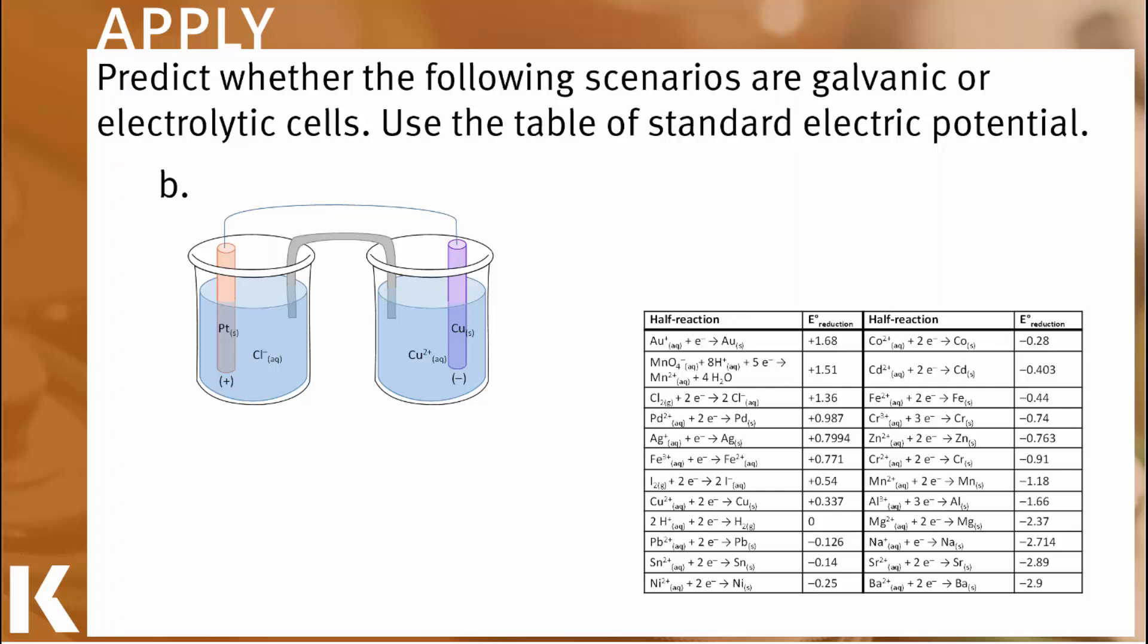But let's look at the reduction potentials just to make sure. So let's find for each half reaction the reduction potential. There's the chlorine, reduction potential positive 1.36. For the copper, positive 0.337. Therefore, we see that chlorine has the higher reduction potential. And remember what that phrase means, it is more likely to be reduced. So since reduction always happens at the cathode, if this is a galvanic system, we would expect that chlorine is going to be at the cathode.